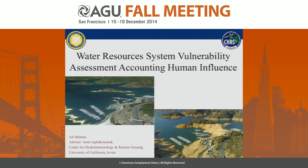Before going through the slides, I just wanted to show these couple of figures, which are both for Lake Oroville in Northern California in 2009. The left one is showing January 2009, while the other one is in August. As you can see, in just about 10 months, it is no longer good for recreational purposes because of scarcity of water.